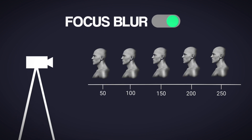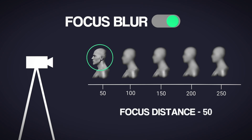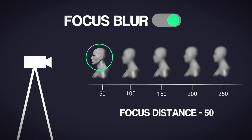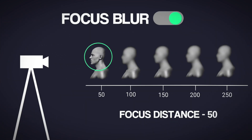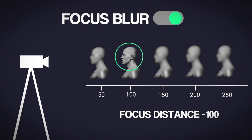Suppose we have added five people in our scene, each placed at a distance of 50 units from the next. If I increase the focus distance value to 50, our first person will be in focus while the rest appear blurred. Similarly, if I set the value to 100, the second person will be in focus and the rest will be blurred.